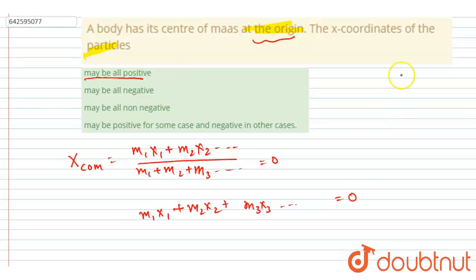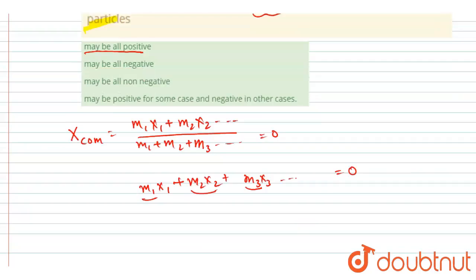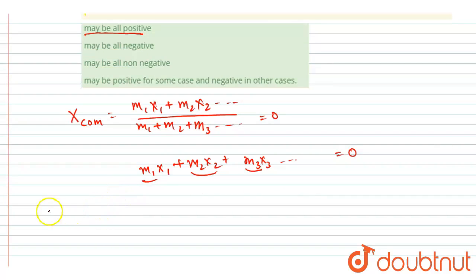Then if you see, if all these terms are positive, since mass can't be negative, mass can't be negative, and all the x-coordinates are positive, so how can the summation be zero? If all the x-coordinates are positive, so I will write here, if all the x-coordinates